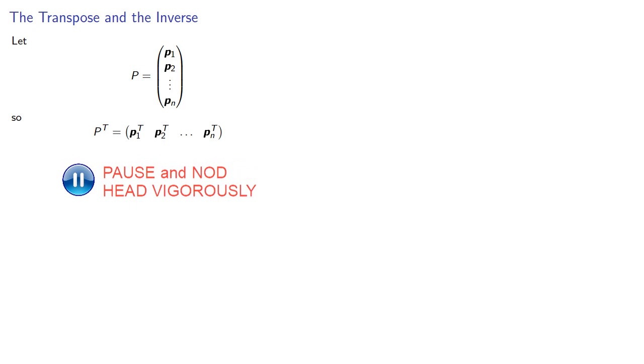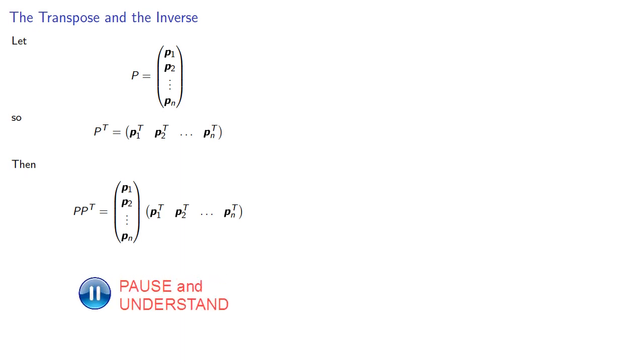Well, let's prove this. Suppose P is a permutation matrix where we'll indicate our row vectors as p1 through pn, and P transpose will be... So let's find the product P P transpose, which will be...